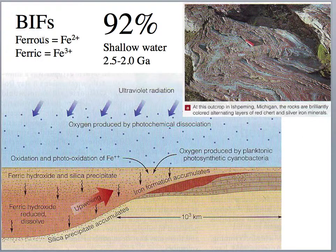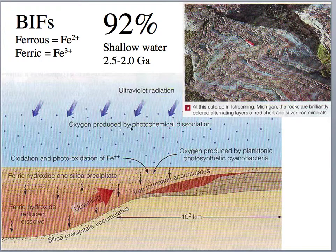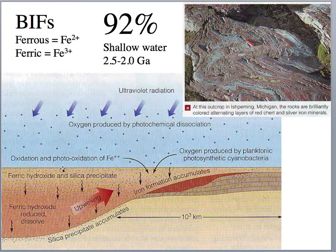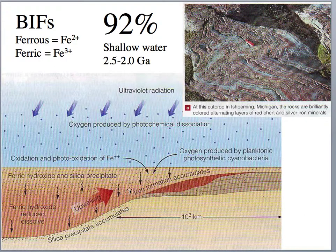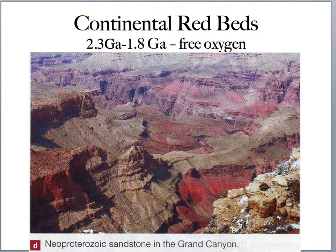Banded iron formations — the ferrous iron is a reduced iron, and we know there was quite a bit of ferrous iron during the Archean. But as oxygen levels increased, it was oxidized to ferric iron, the oxidized form. Ultraviolet radiation and photochemical dissociation produced about 2% of oxygen here; the bulk was produced by oxygen-producing phytoplankton and cyanobacteria, which oxidized that reduced iron. Upwelling currents brought dissolved iron from deeper waters, and once they encountered oxygen at shallower levels, they precipitated to form the banded iron formations.